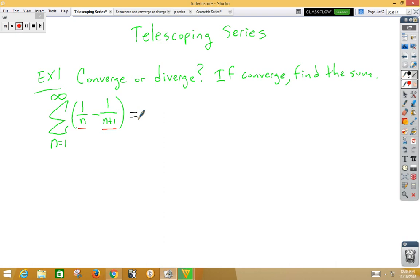Let's start by plugging in n=1. When we plug in 1, we get 1/1 = 1 minus 1/2. Plugging in n=2, we get a positive 1/2 and a negative 1/3.